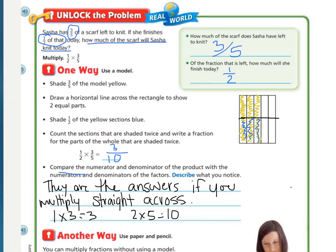You should have said something to the effect as they are the answers if you multiply straight across, meaning that one times three equals three, those are the numerators, and then two times five equals ten, which are the denominators.